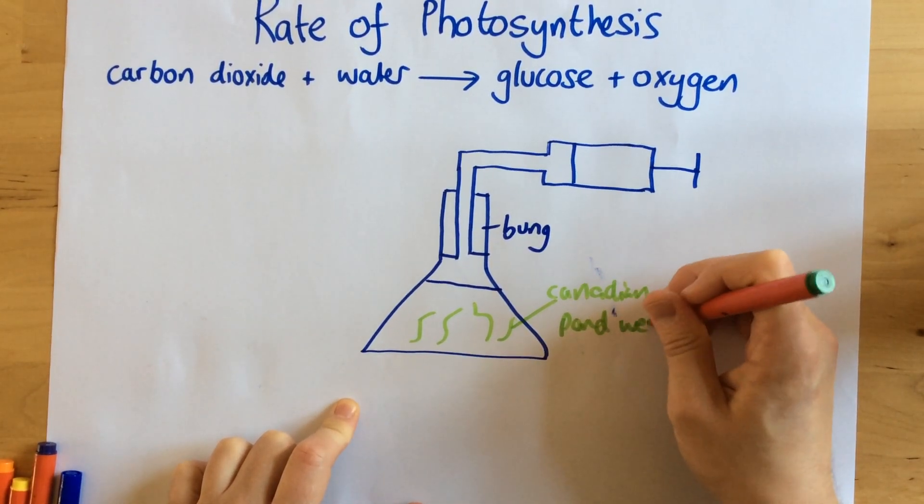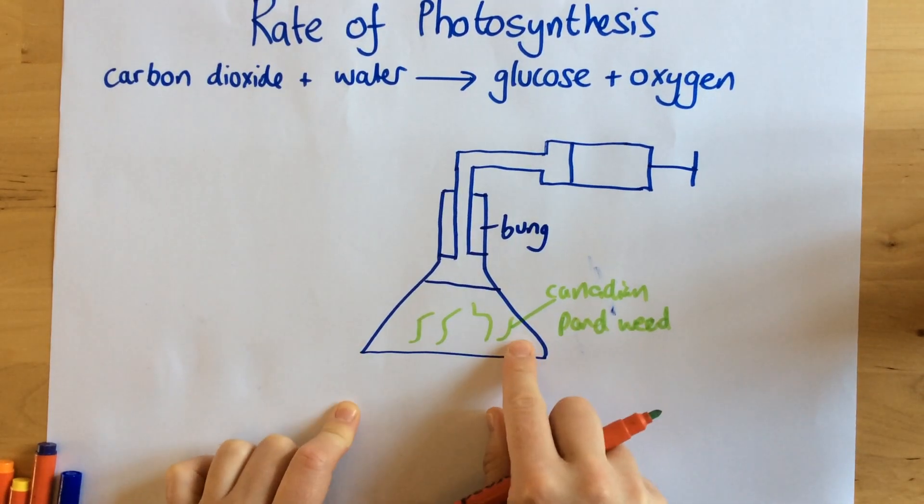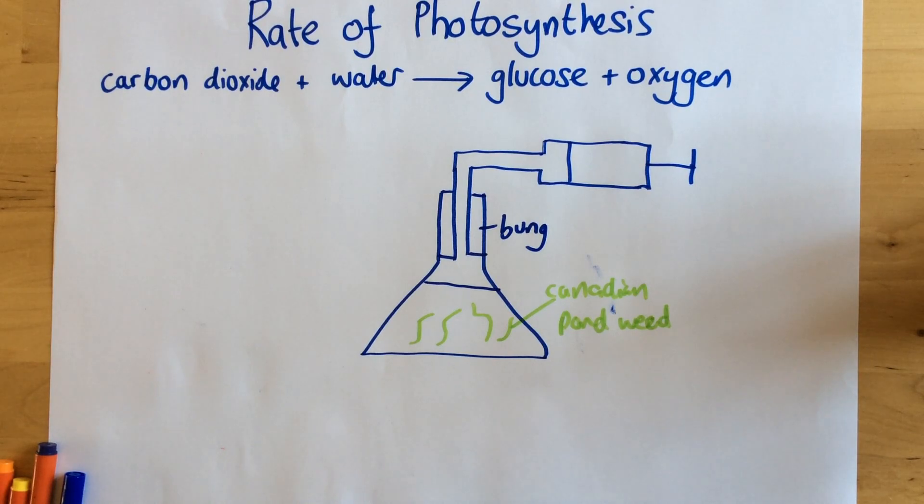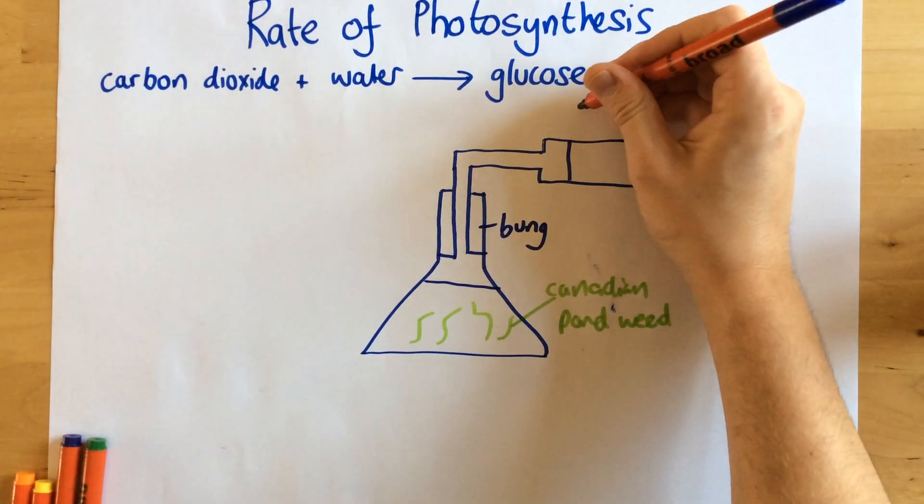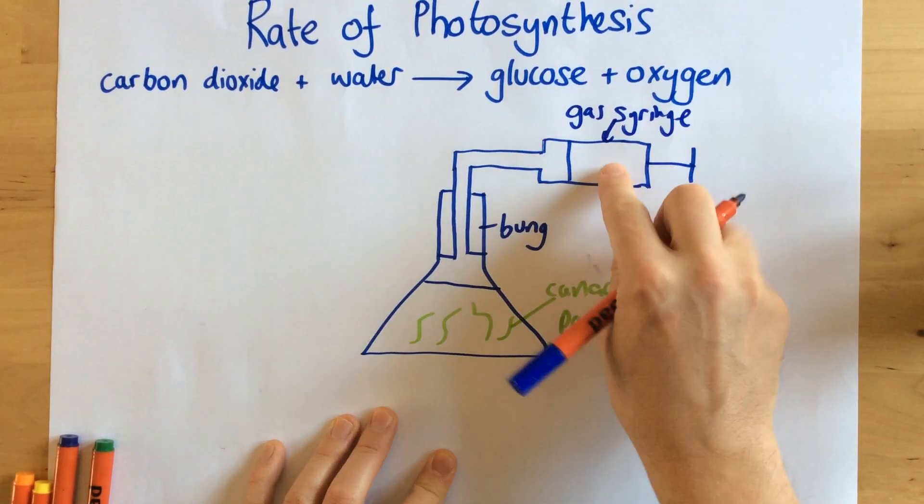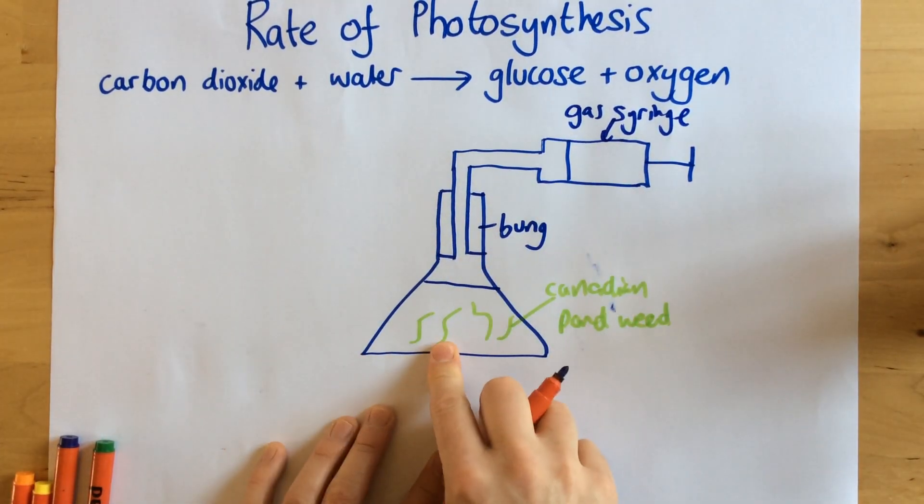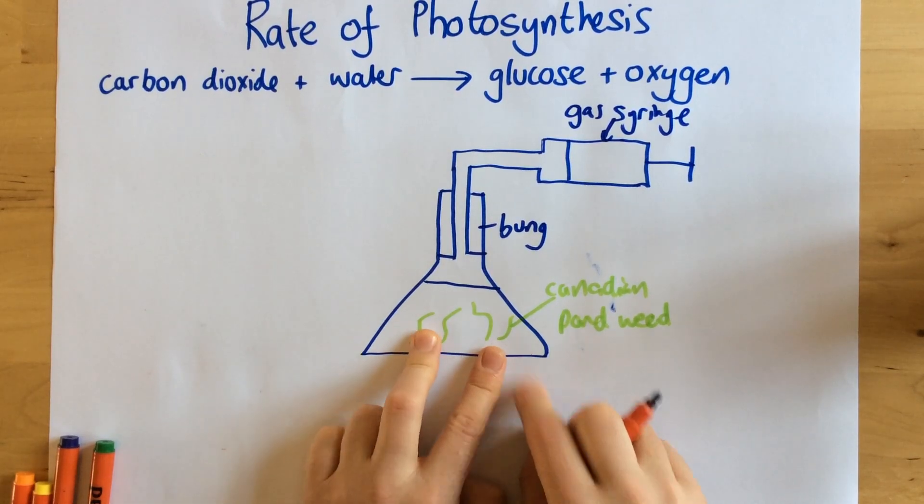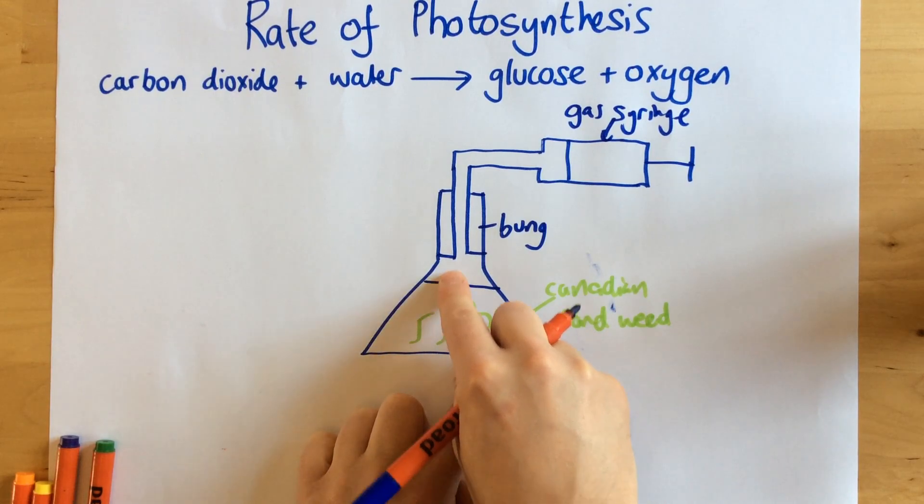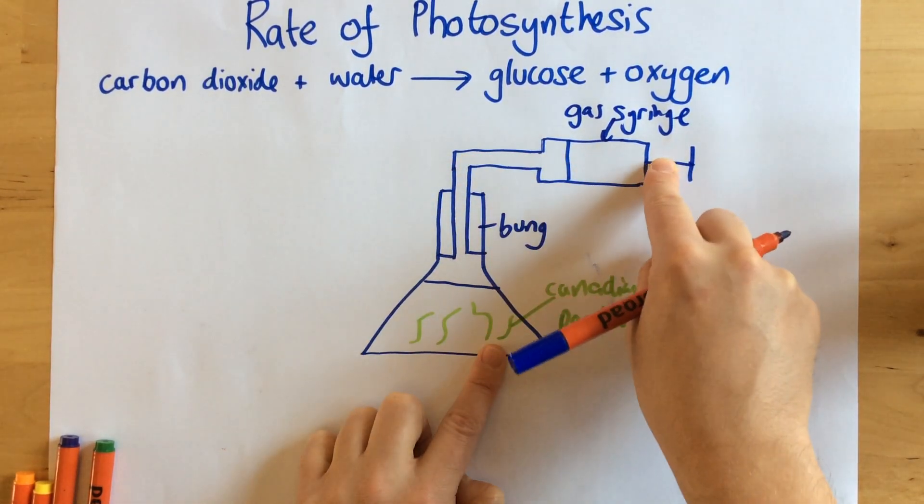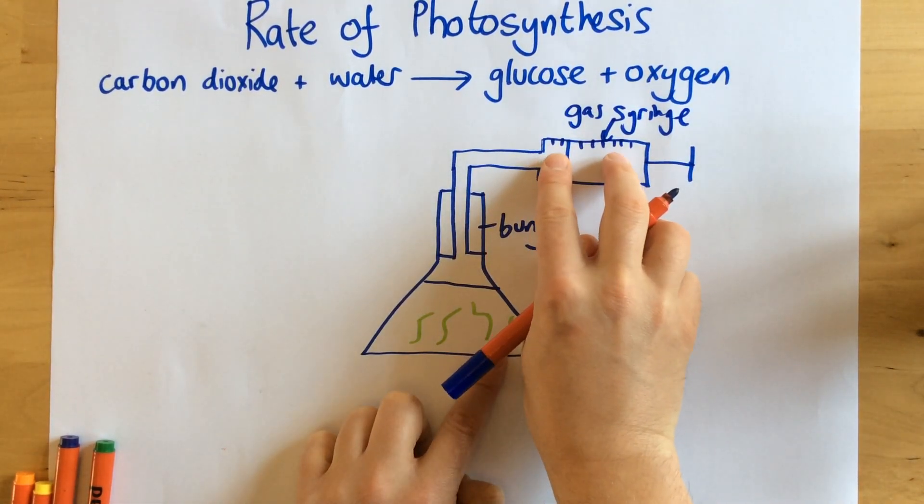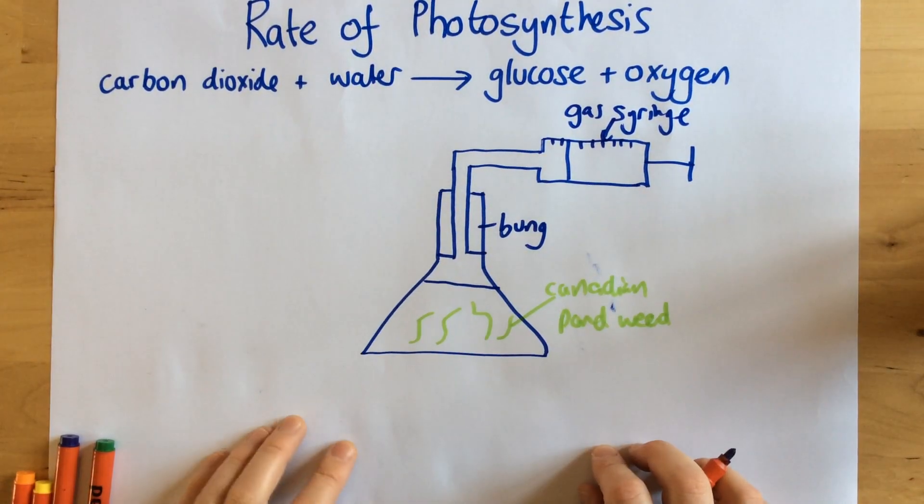So this pondweed is just in some water right here, beneath the surface of the water. What we've got up here is a gas syringe. So what happens is during photosynthesis, as we can see from the equation, it releases oxygen. So that oxygen travels up here and is collected in the gas syringe. You can then measure and record the volume of gas which is collected in the gas syringe.